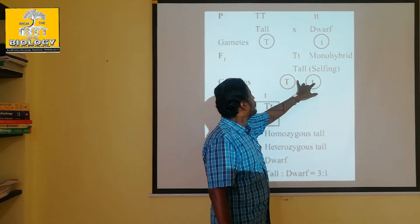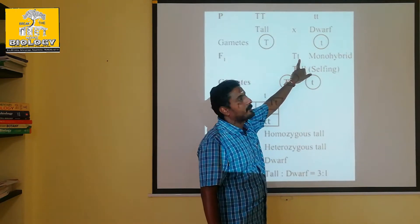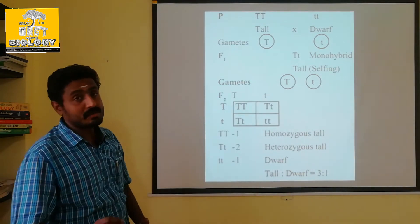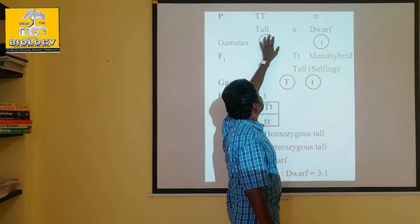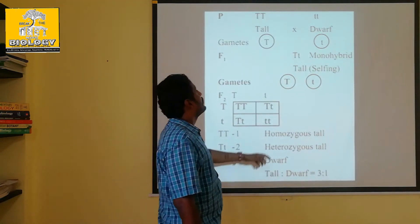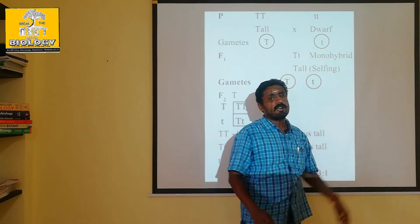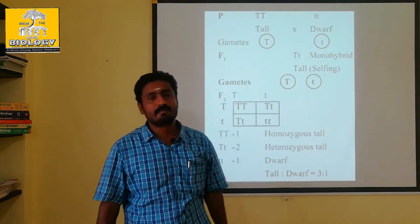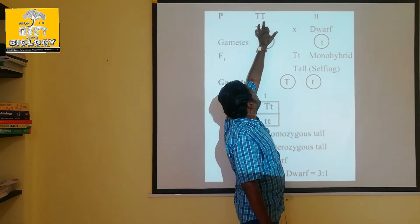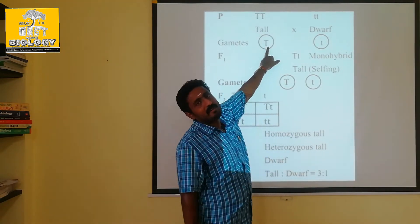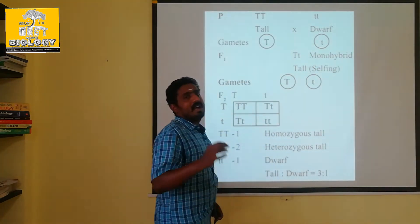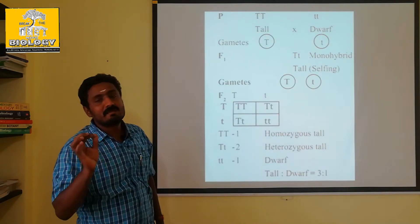Capital T is dominant. Capital T, small t. So capital T is dominant, small t is recessive. Dominant part. And by this, the small t — at the same time, the law of segregation.